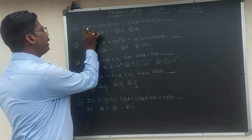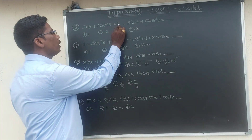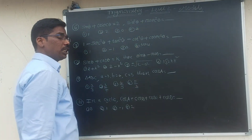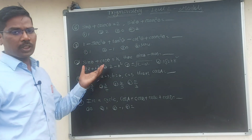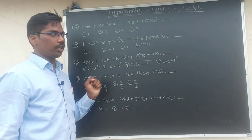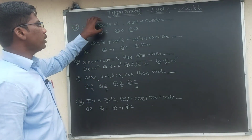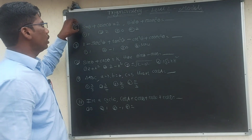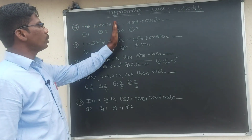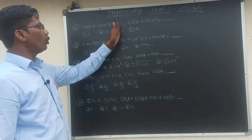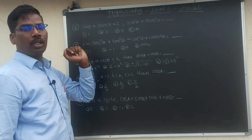Problem 6: sin θ plus cos θ is equal to 2. Then sin squared θ plus cosine squared θ equals how much? First, sin squared plus cos squared equals 1, and (a + b) squared is 4 when a + b = 2. So the answer is 2.